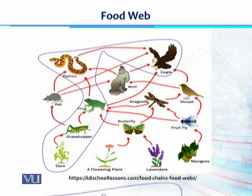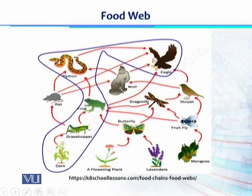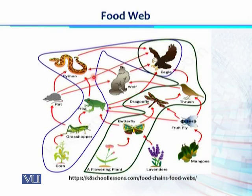For example, here is one food chain. In this food chain, there is a primary producer which is corn. So the chain goes: corn, grasshopper, then frog, then snake which is python, and then eagle. This is one food chain. There is another food chain that starts from the producers again, eaten by the butterflies and then dragonfly, then thrushes, eaten by the eagle.